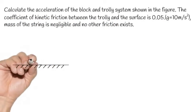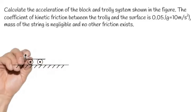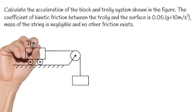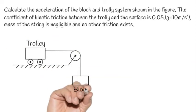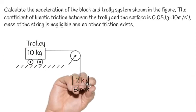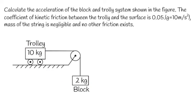Mass of the string is negligible and no other friction exists. So here we have the diagram, this is the trolley, this is the block. Trolley mass is 10 kg and the block has a mass of 2 kg. Now let us solve it.